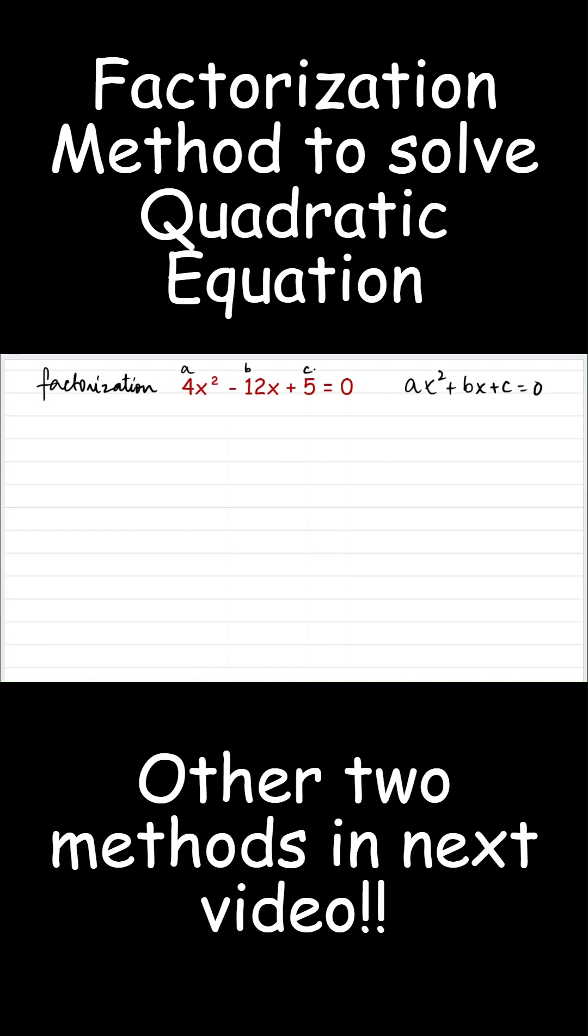b is minus 12 and c is 5. So I am looking for two numbers which when added give me b. What is b? Minus 12. And the same set of numbers when multiply give me the product of ac. What is product of ac? 4 times 5, 20.